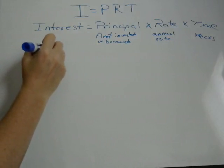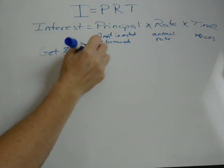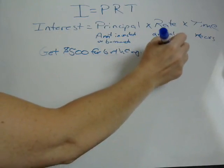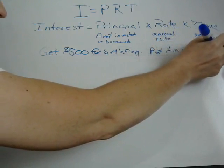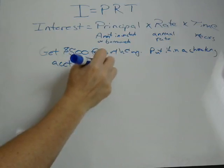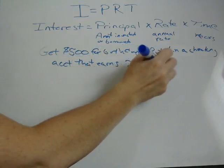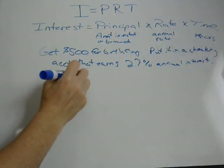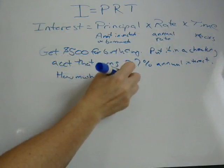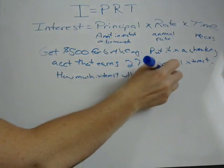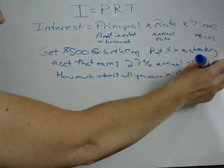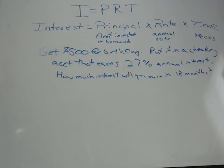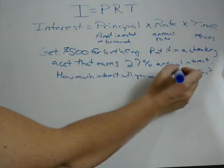So let's do a problem. Let's say you get $500 for your birthday and you put it in a checking account that earns 2.7% annual interest. If you leave it in there, how much interest will you earn in 18 months?